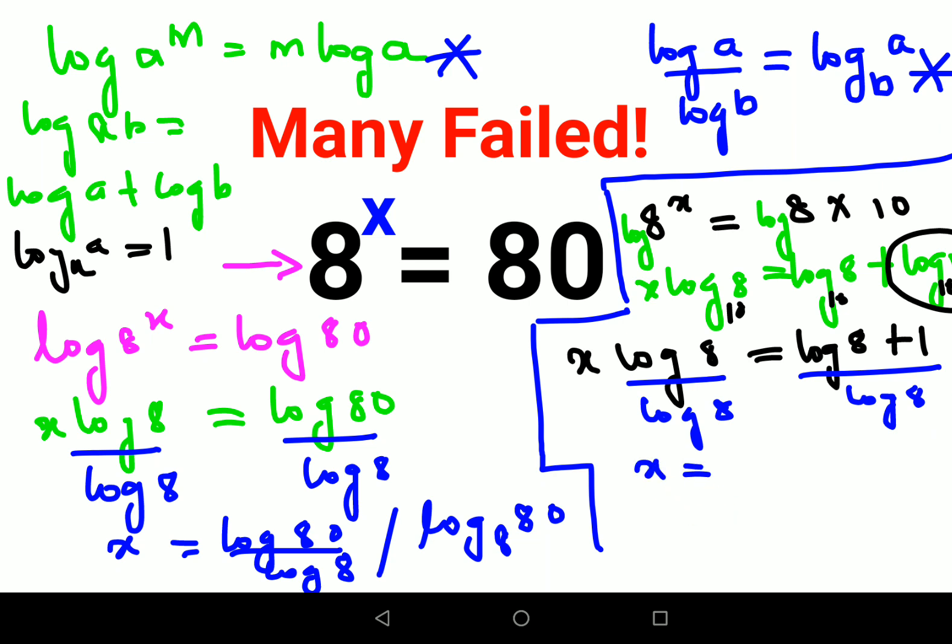So here we can say X log 8 is equals to log 8 plus 1. Now from here, we will divide both sides by log 8. So X becomes, let's split the numerator. So log 8 upon log 8 gets you 1 plus 1 upon log 8. So this is one part of your answer.